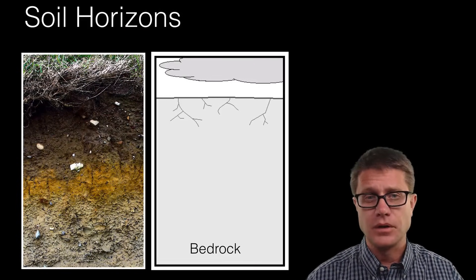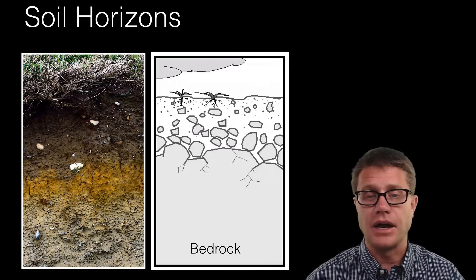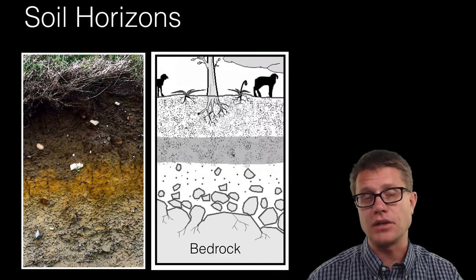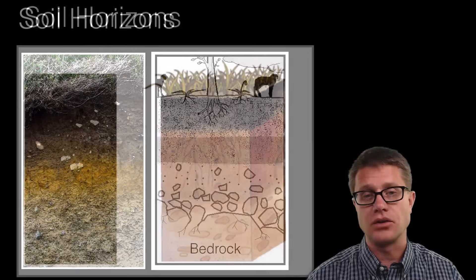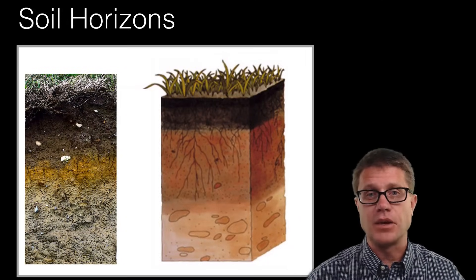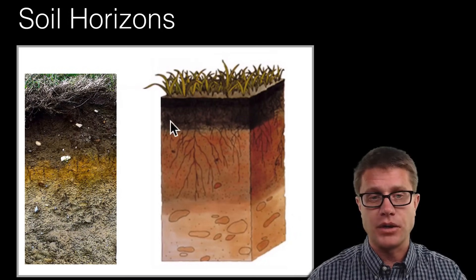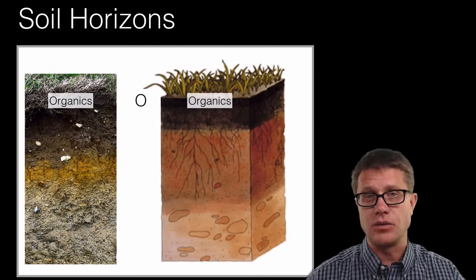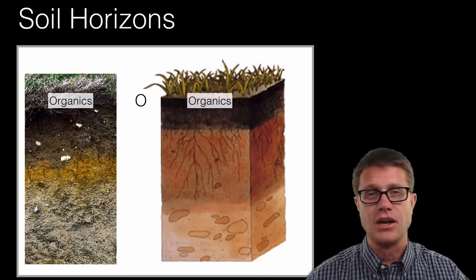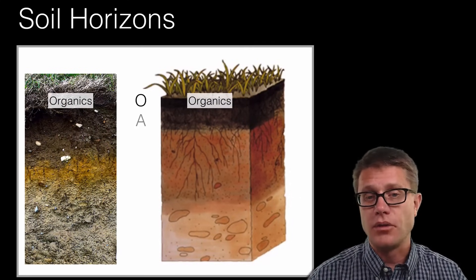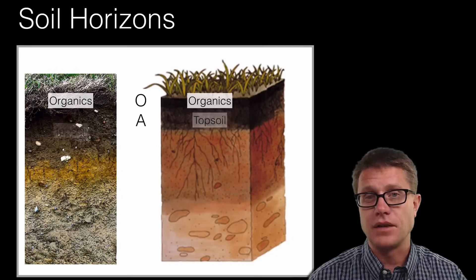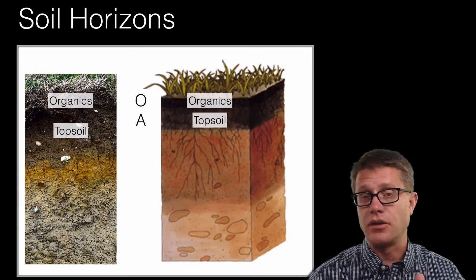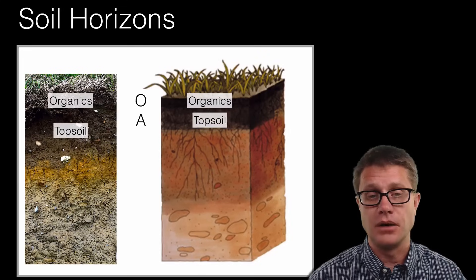If we look at how soil is formed, bedrock is broken down and weathered over time, and we eventually get what are called the horizons of the soil. At the top we are going to have what is called the O horizon — that is going to be the organic horizon, where we are going to have a mix of a lot of dead or dying material. Below that we are going to have the A horizon, that is going to be our topsoil — a nice mix of minerals and also all the organics from the horizon above.